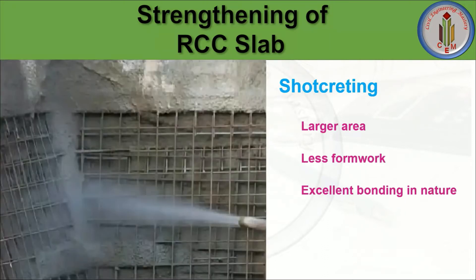Next is shotcrete. This technique can be used when we need to repair a slab over a larger area. In this technique, mortar or concrete is sprayed by a nozzle with high velocity on the prepared surface. As you can see, the mortar or concrete is sprayed through a nozzle with high velocity wherever needed on the surface. That process is called shotcrete. There are two types of shotcrete process: one is the dry mix process and the other is the wet mix process.